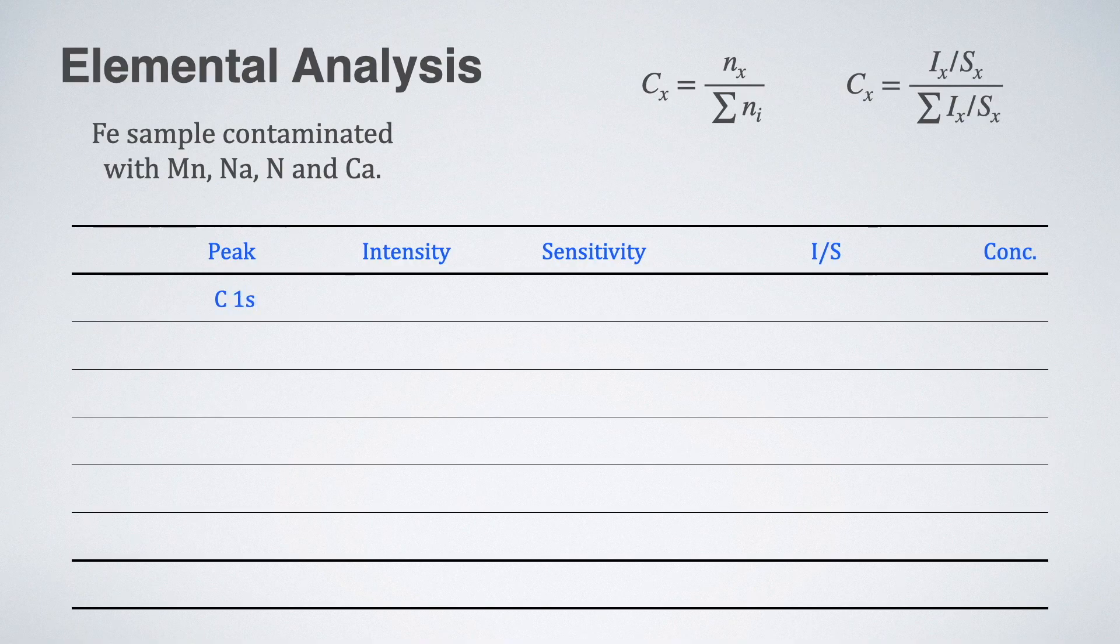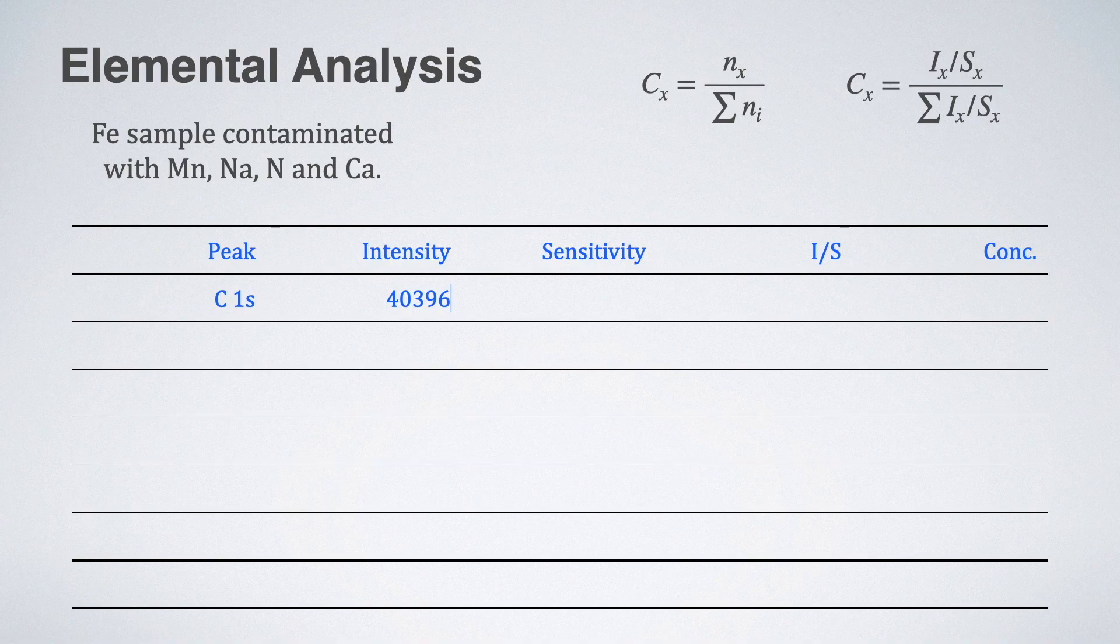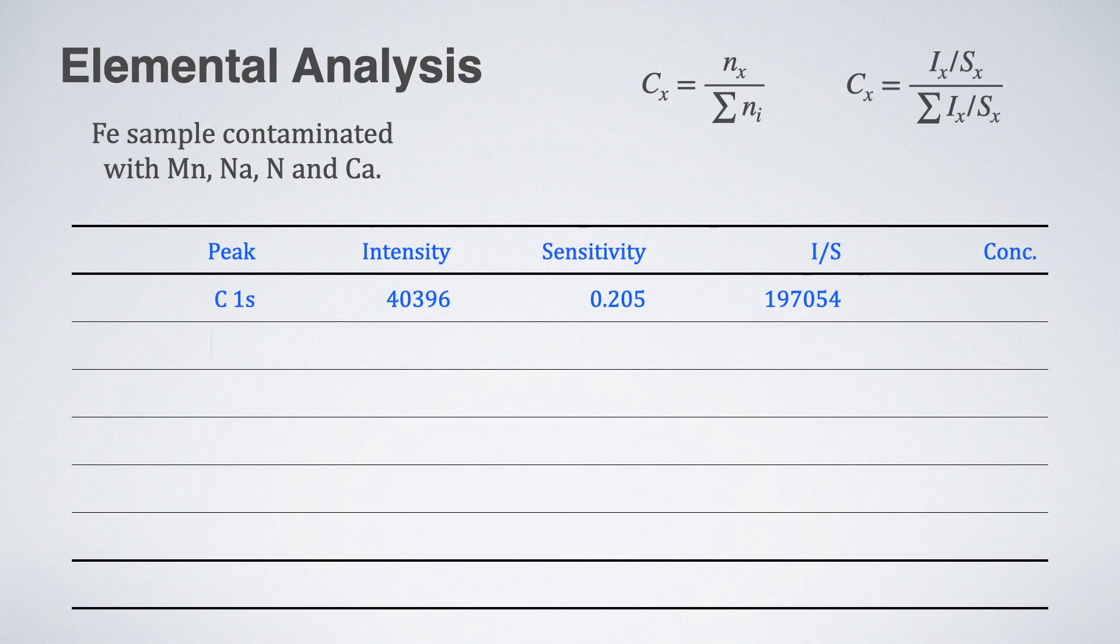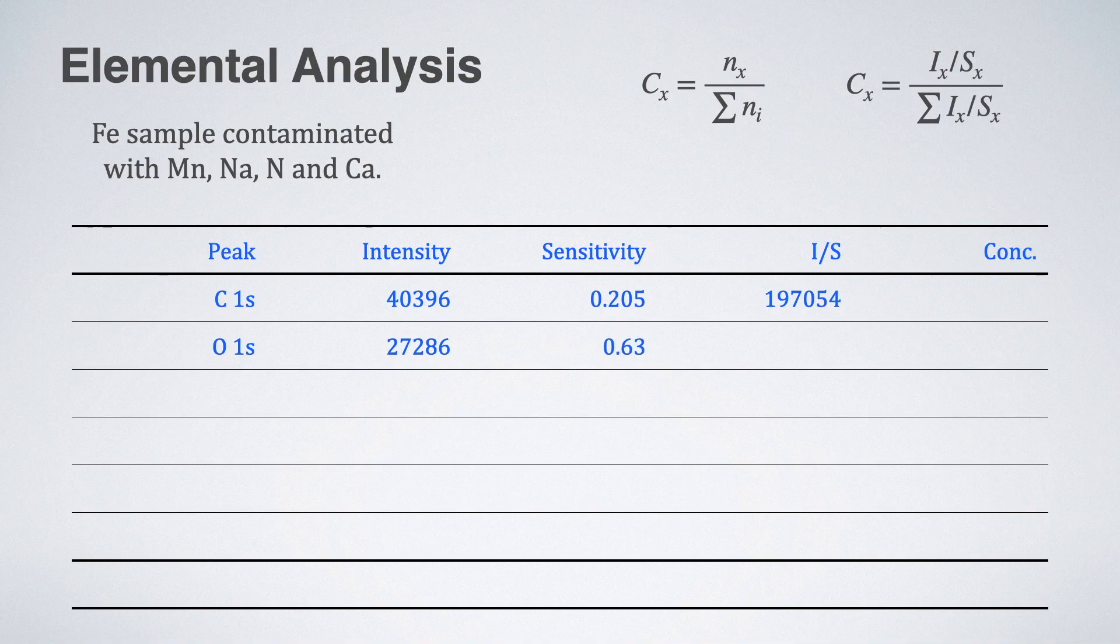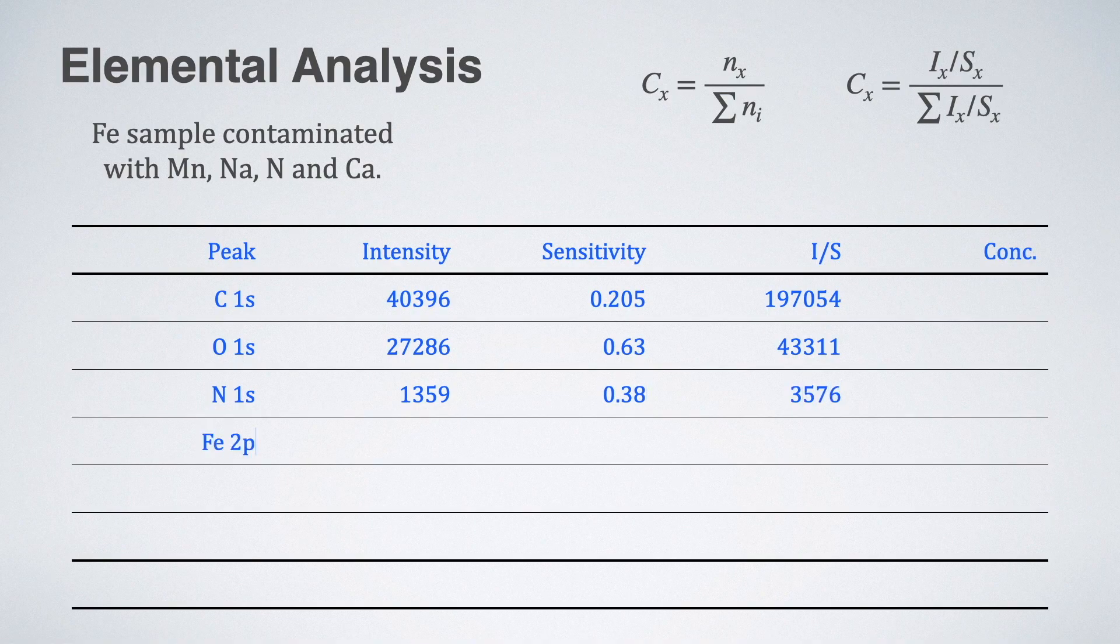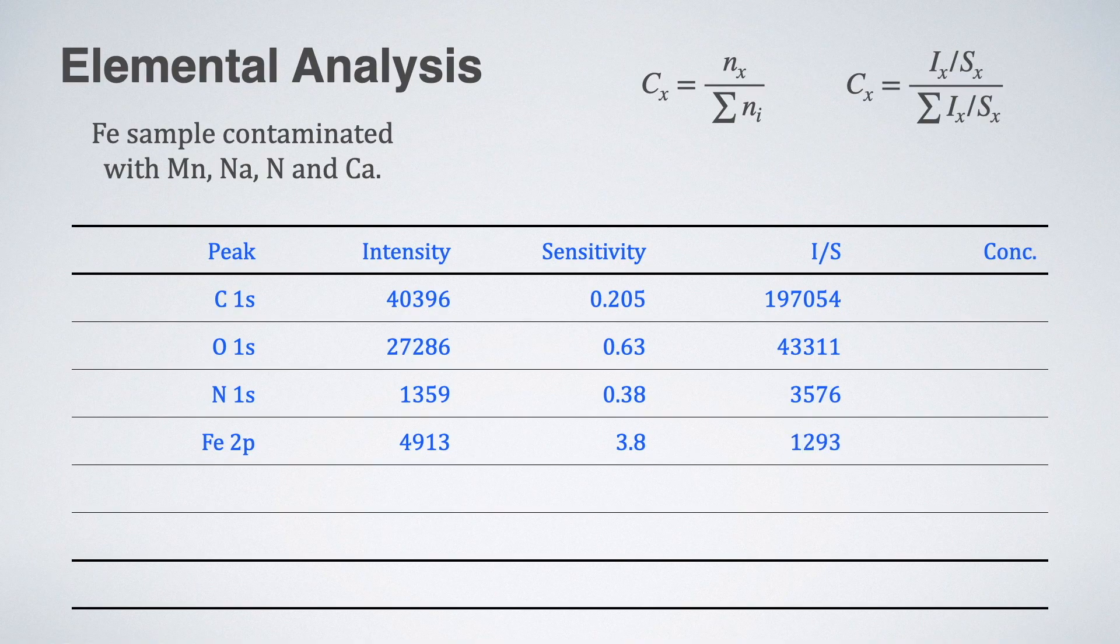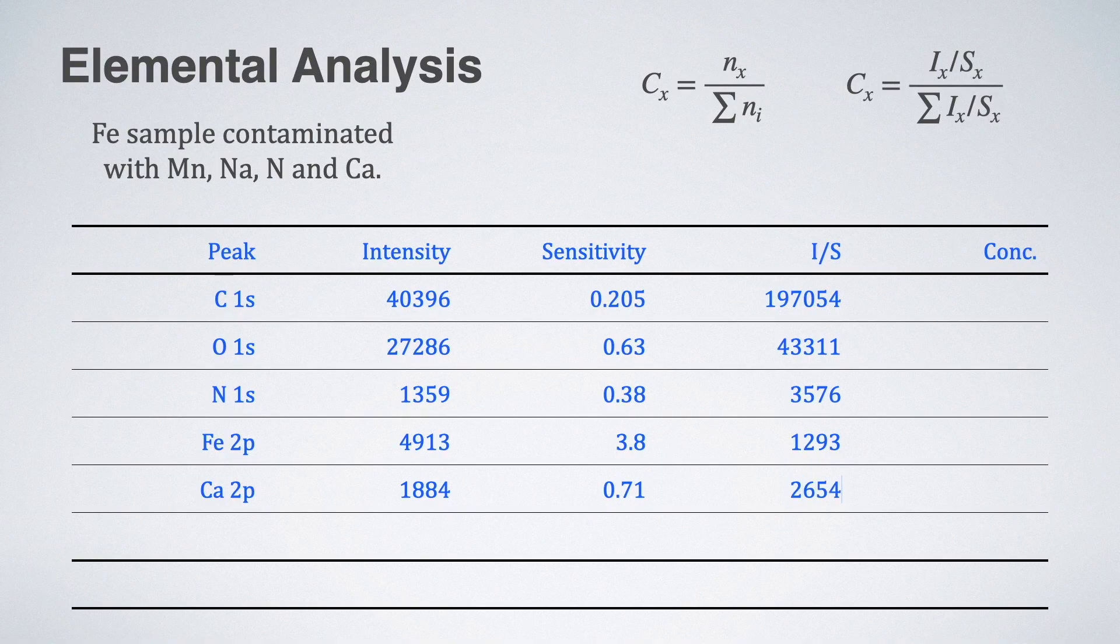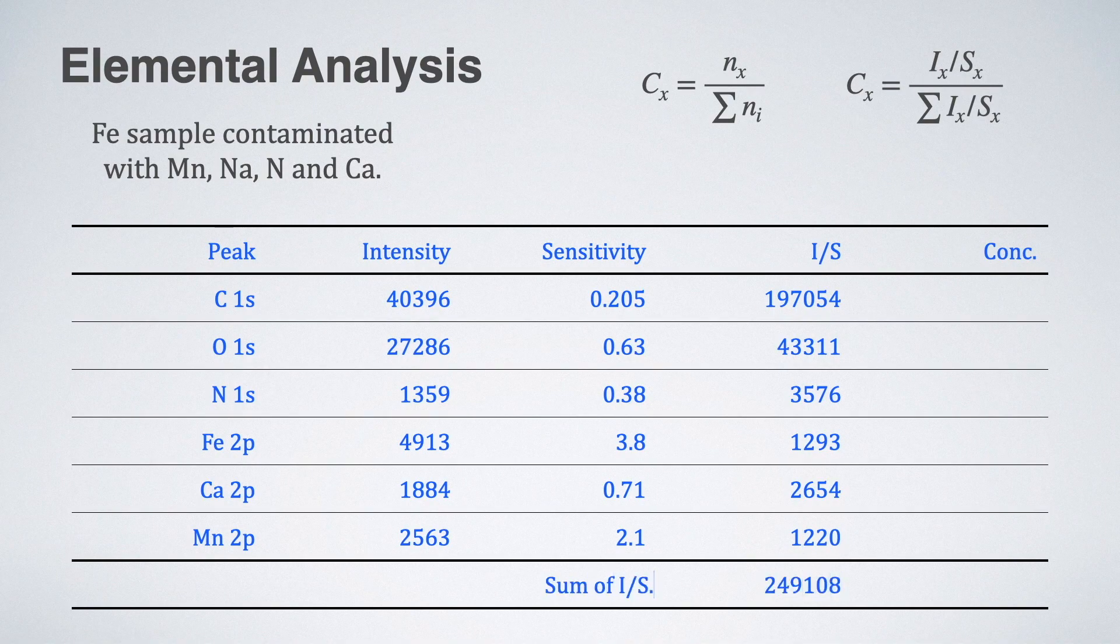So, if we have the intensity of carbon 1s peak 40,396 and its sensitivity factor is 0.205, then the ratio I by S becomes 197,054. In this way, we can calculate the I by S for each element. And now, sum of I by S will be 249,108. And finally, we can divide ratio of I by S with the sum of I by S and we can convert it into percentage.